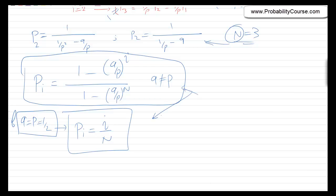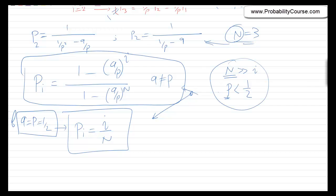These two formulas give P(i), the probability that A wins given that he starts with i dollars. It's interesting to see why people who gamble repeatedly at a casino end up losing their money. In a casino, N is very large because the casino has a lot of money, and N is much larger than i. Also, P < 1/2 because the casino has an advantage in each round. With these two conditions, P(i) — the probability that the person wins — turns out to be extremely small.